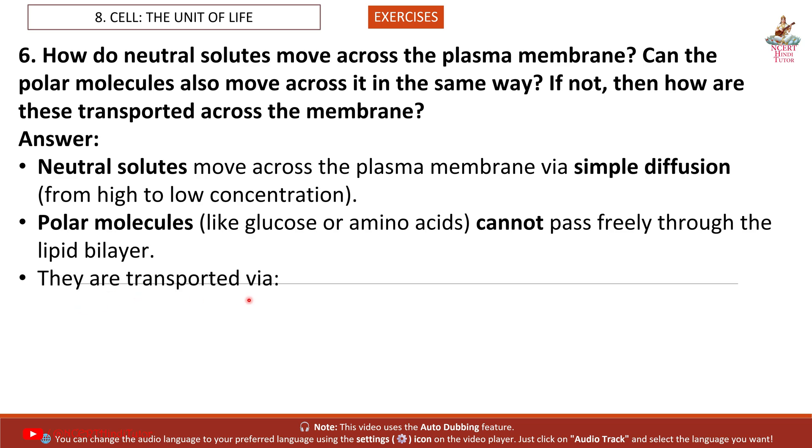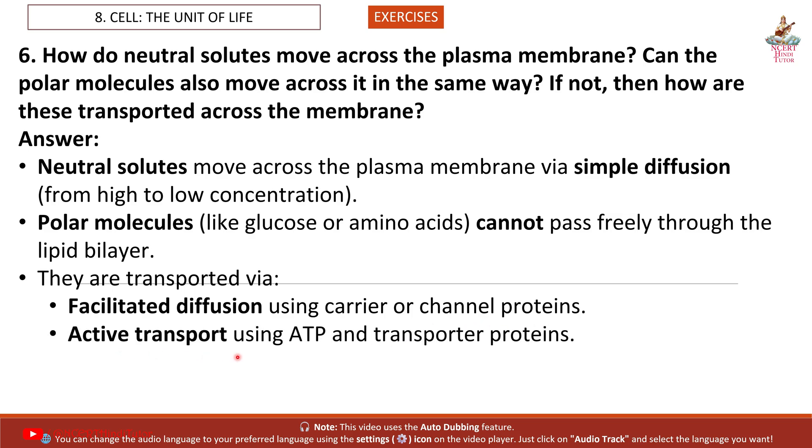Polar molecules like glucose or amino acids cannot pass freely through the lipid bilayer. They are transported via facilitated diffusion using carrier or channel proteins, or active transport using ATP and transporter proteins.